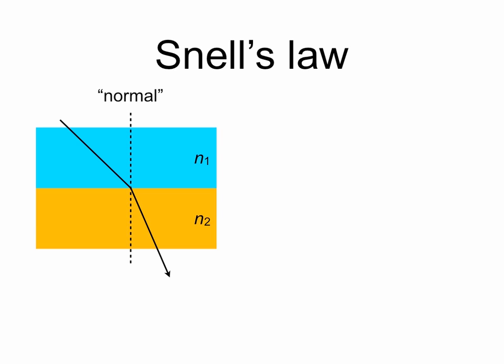So we can draw a normal, or a line that's perpendicular to the interface or boundary between the two materials, and label θ1, the angle that the incident light makes with the normal, and θ2.